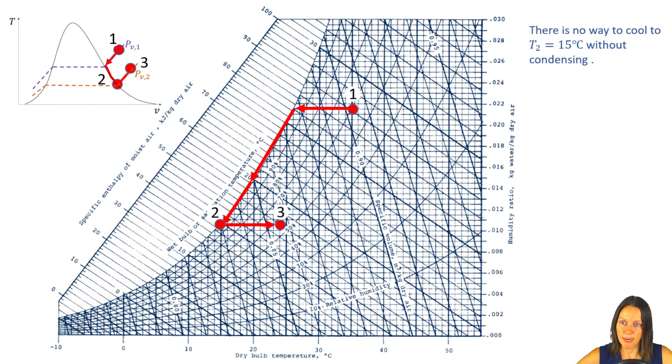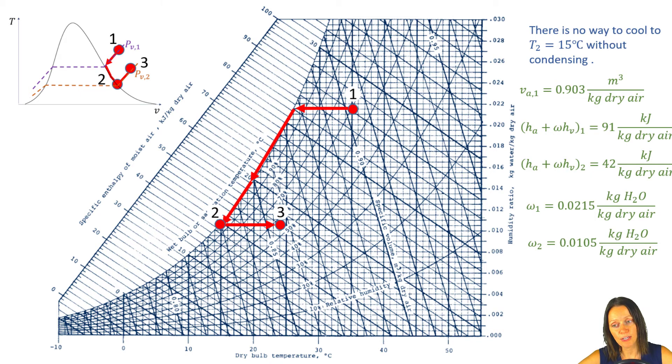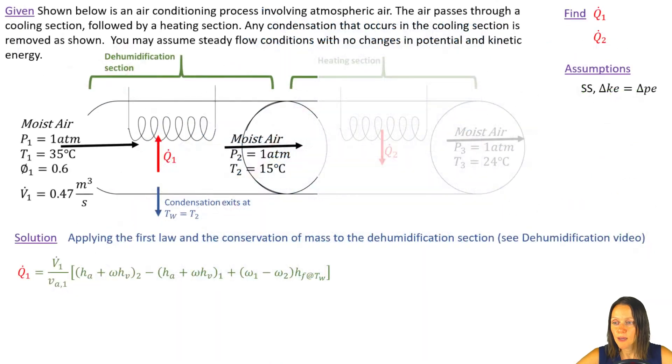If I go back to my psychrometric chart here, I can pull off all the values that I need. So if I plug everything in and I look up my H sub F value, I get a negative 34.512. And that makes sense. I would expect that Q dot value to be negative because I'm removing heat from the moist air. My control volume is just encompassing the moist air. It's not encompassing the coil. So heat is allowed to leave the moist air and go into that coil.